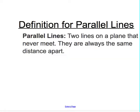The definition for parallel lines: parallel lines are two lines on a plane that never meet. They are always the same distance apart. In other words, they're just two lines that are the same distance apart and they will never intersect.